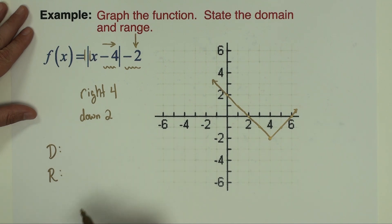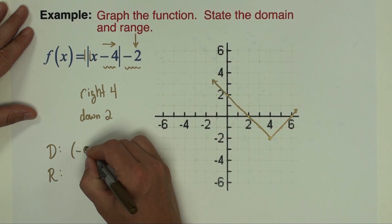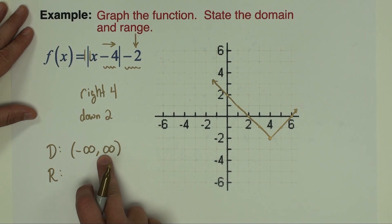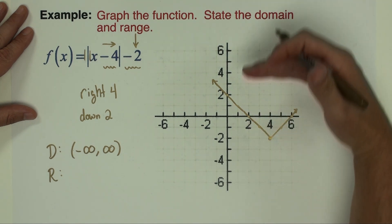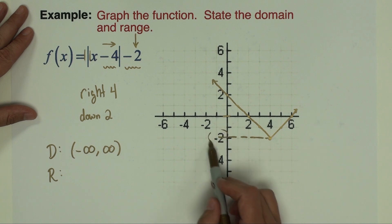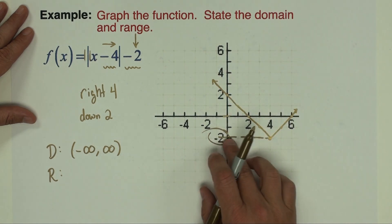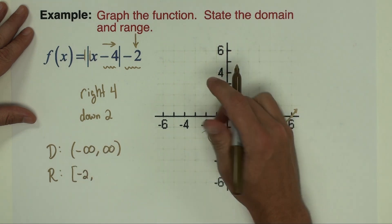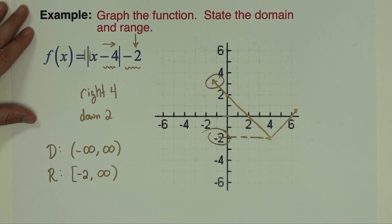For domain and range: the domain is negative infinity to positive infinity — every absolute value function has that domain. The range starts at the lowest point of the graph, which is the vertex at y = -2, and goes up forever. So the range is [-2, +∞).